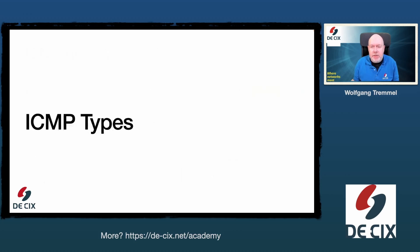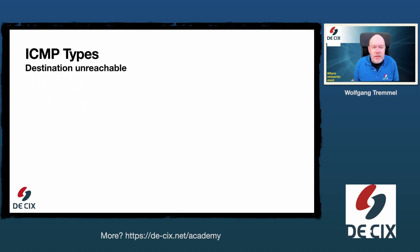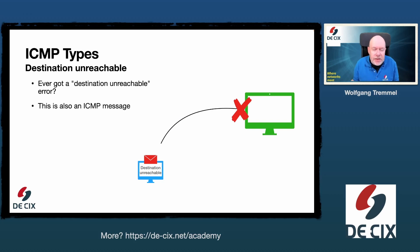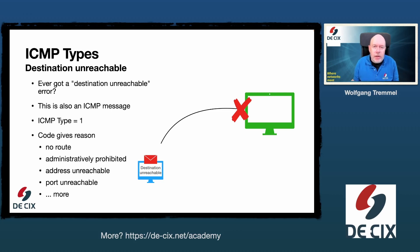There are more ICMP types — for example, destination unreachable. Have you ever seen a destination unreachable error message in your browser or application? That is also an ICMP message. The ICMP type in this case is 1, and the code field gives additional reason why the packet was discarded. Unlike time exceeded, destination unreachable is usually created by the target system or by a firewall to indicate that the packet could not be delivered.